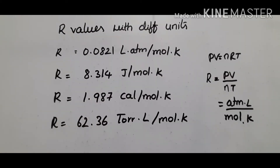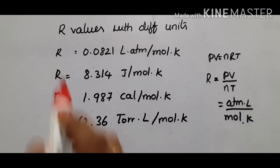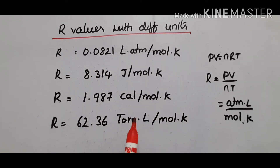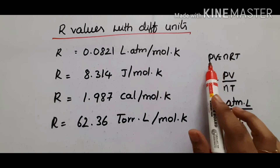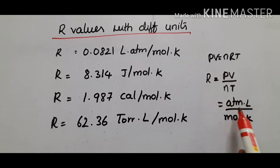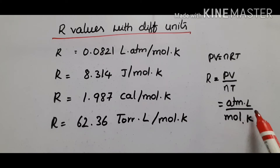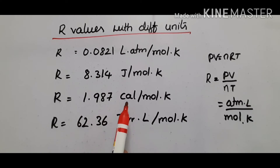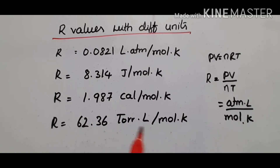Before solving numerical problems, here is the list of R values with different units. R equals 0.0821 liter atmosphere per mole K — this comes from the ideal gas equation PV equals nRT. R equals 8.314 joules per mol K. R equals 1.987 calories per mol K. We select the appropriate R value depending on the units in the question.